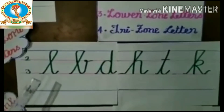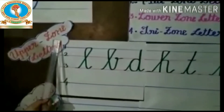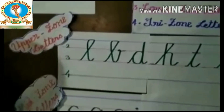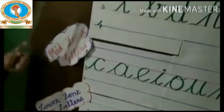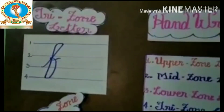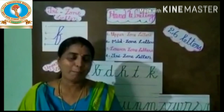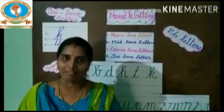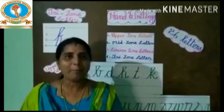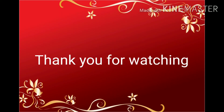The four zones are complete. First: upper zone letters. Second: mid zone letters. Third: lower zone letters. Fourth: tri-zone letters. Dear children, handwriting is important for our life. So practice one page of handwriting every day. Thank you. Bye.